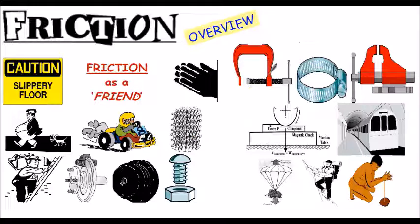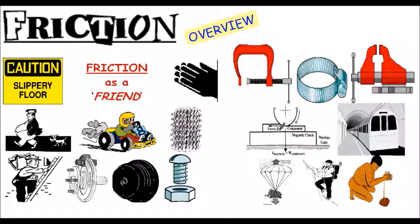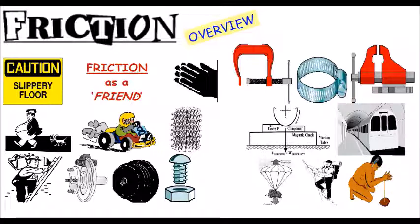Clamping devices like G-clamps, vices, and Jubilee clips all rely on friction - without it, none of them work. A magnetic chuck holding a component on a work surface is also partly due to friction. Your trains need friction effects between the steel tyres of the wheels and the steel tracks to run. Parachutes won't work without friction, and you couldn't start a fire without friction. Even shoelaces are kept tied by friction effects.